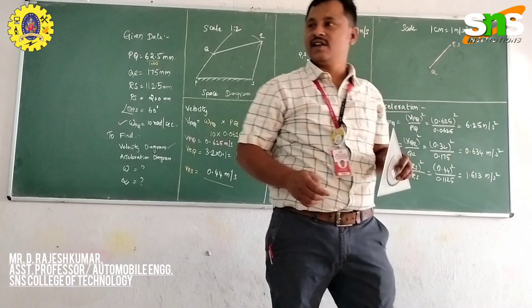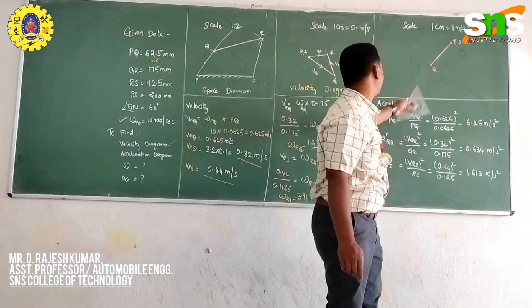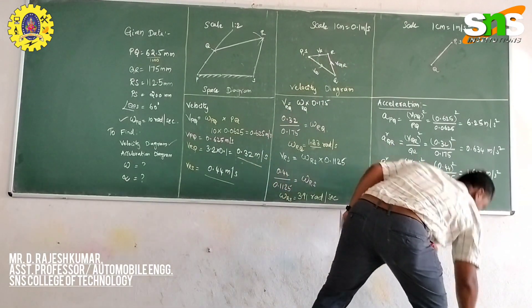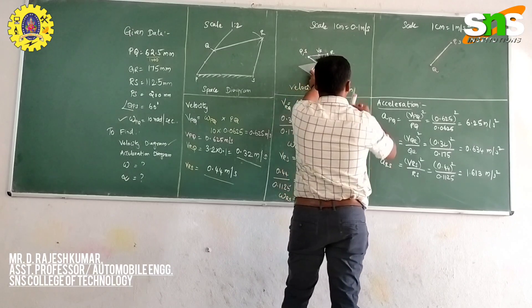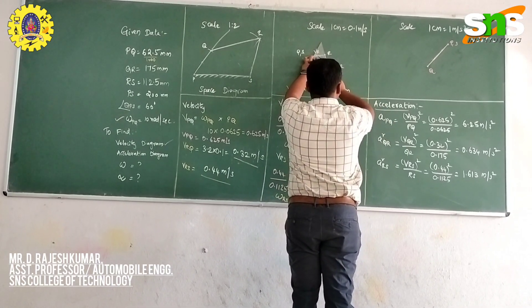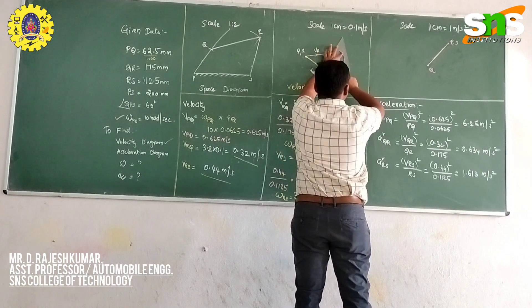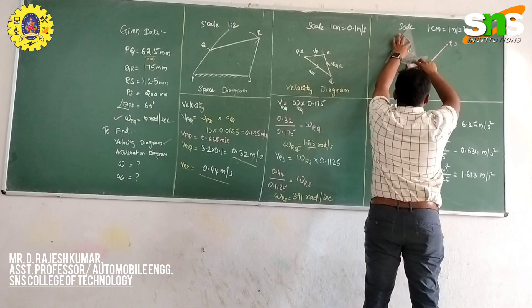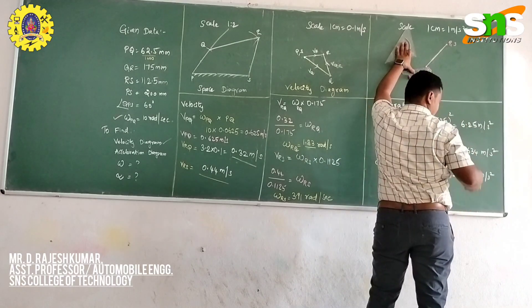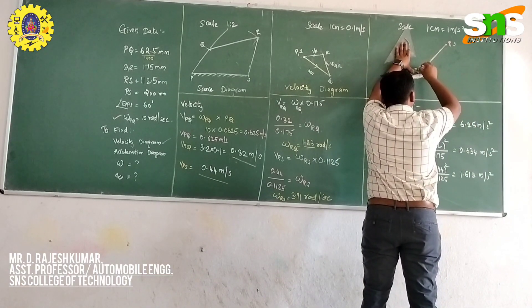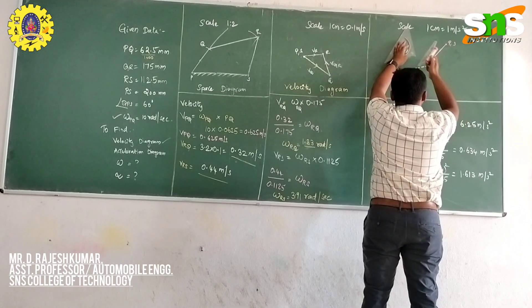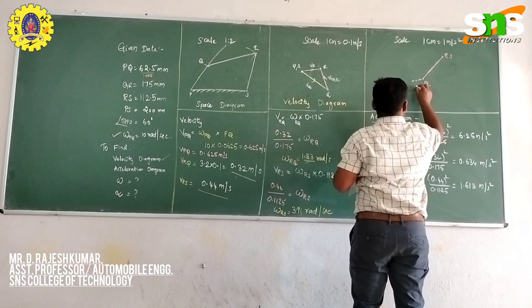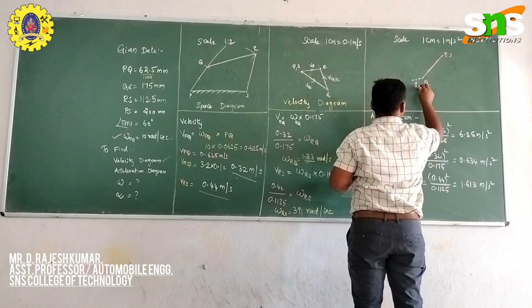From point Q, construct the next line QR. The radial component of QR is 0.6 cm according to our scale. Draw a perpendicular line to link QR from the velocity diagram — this perpendicular line represents the radial acceleration component for QR.